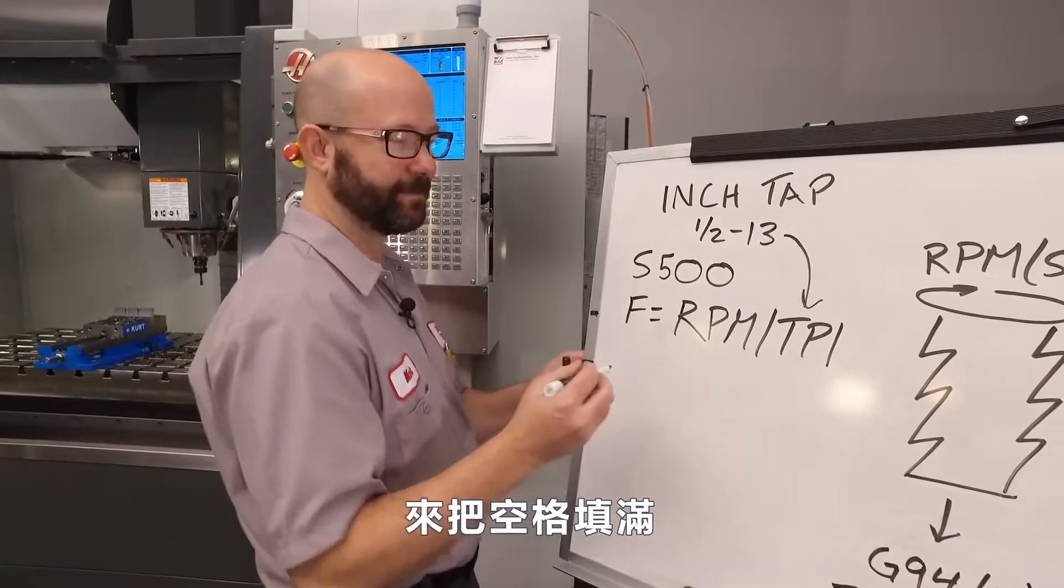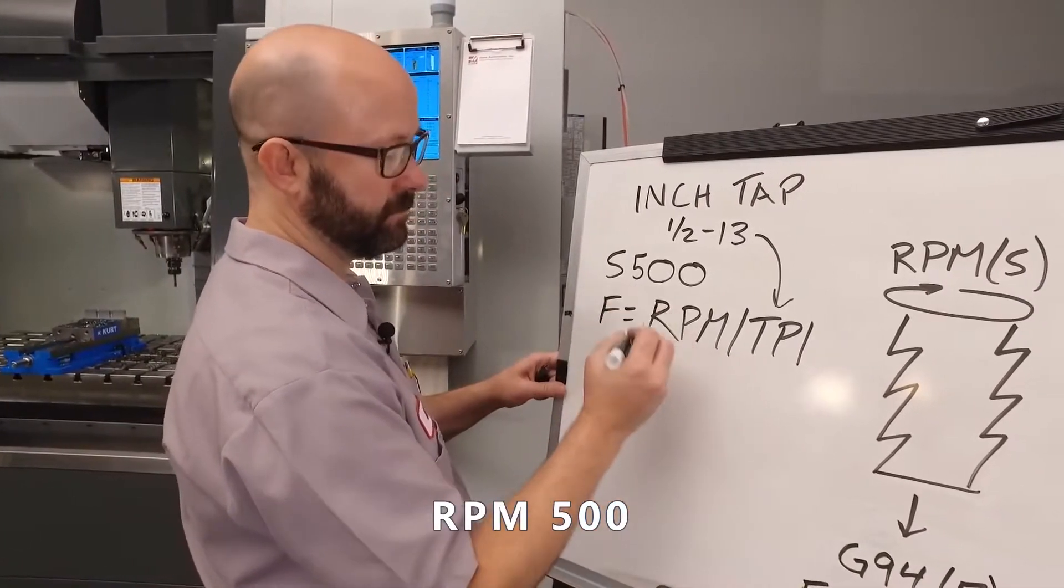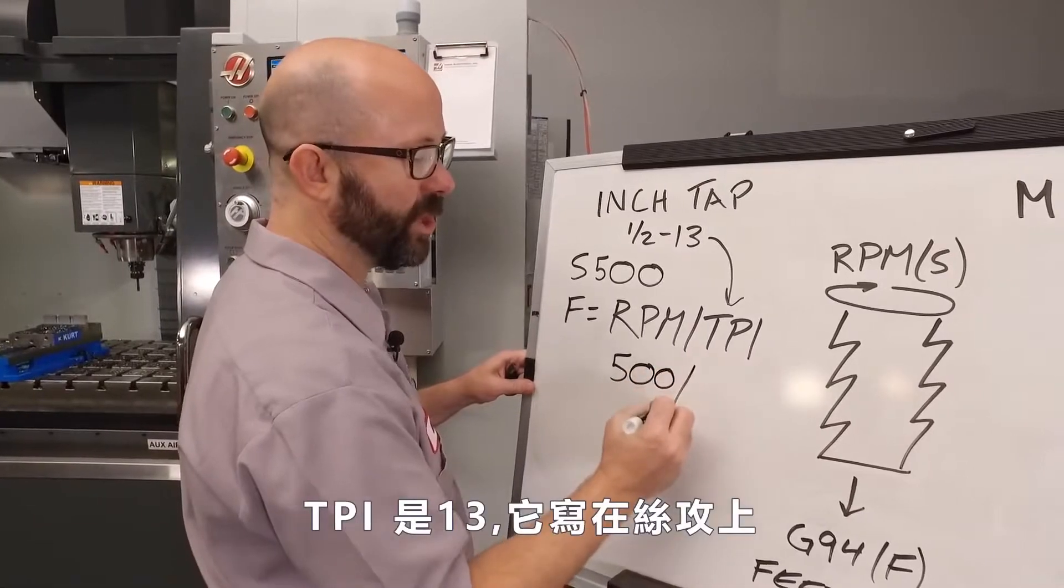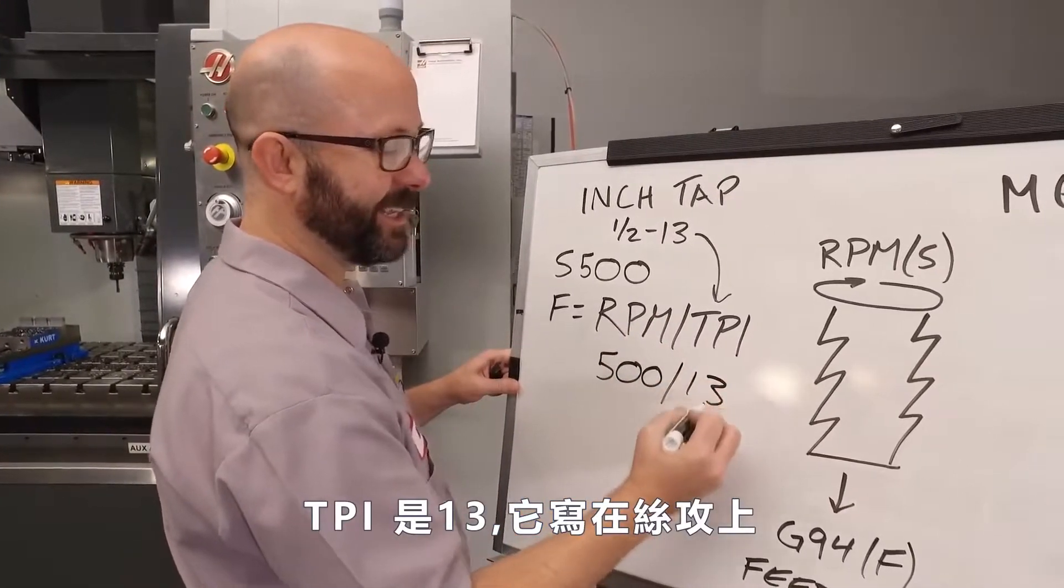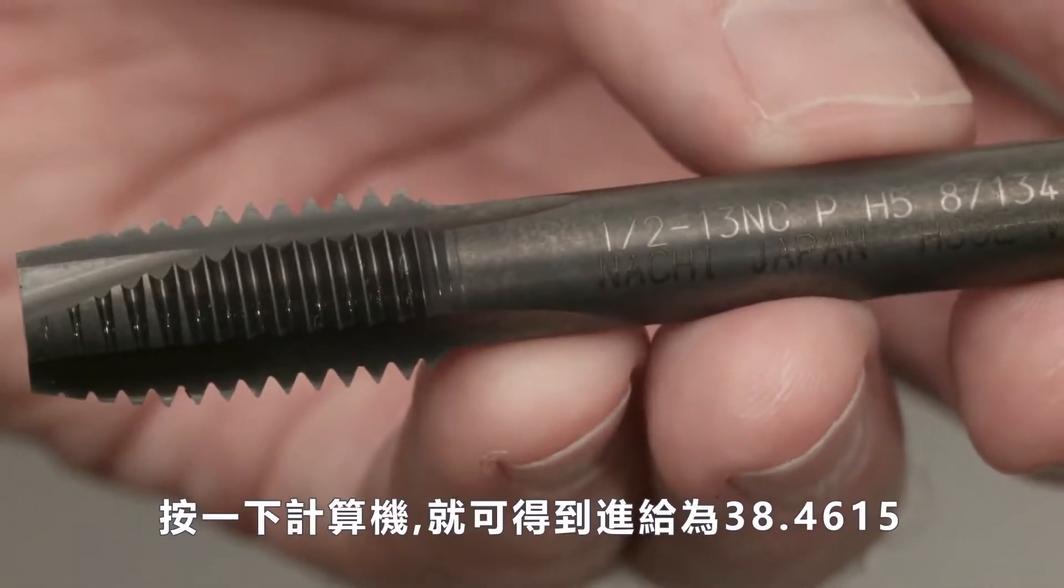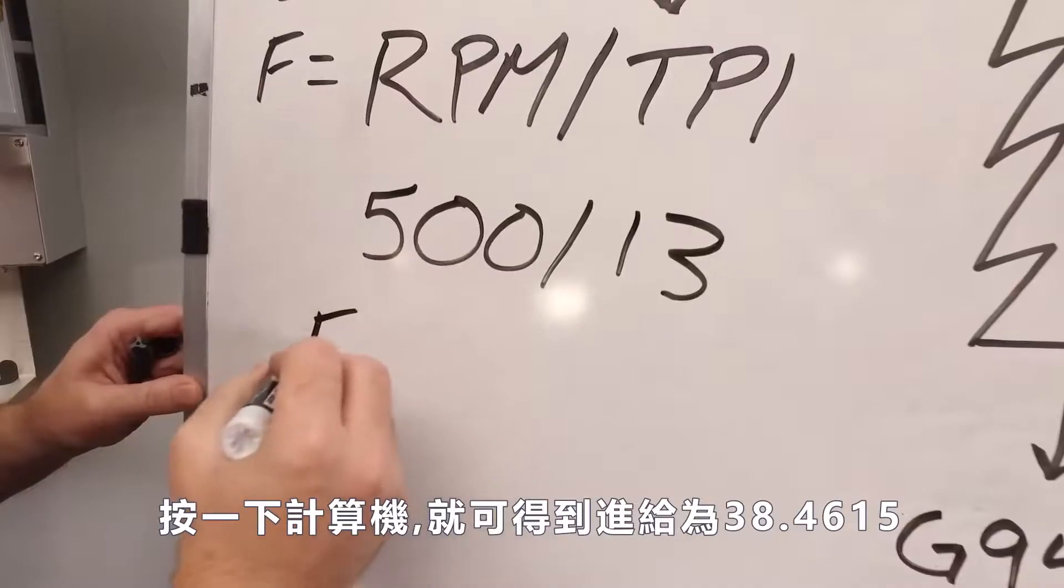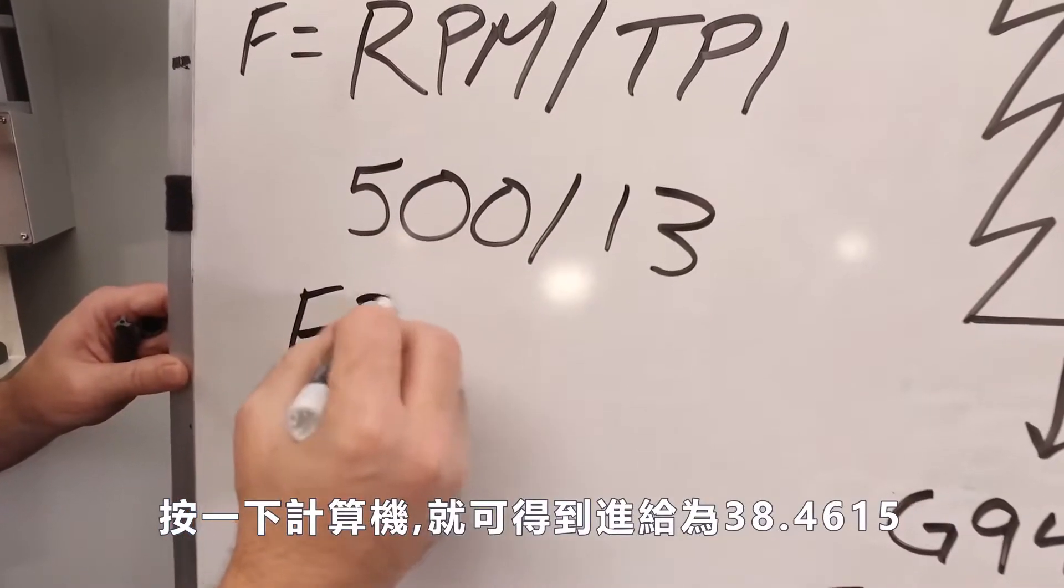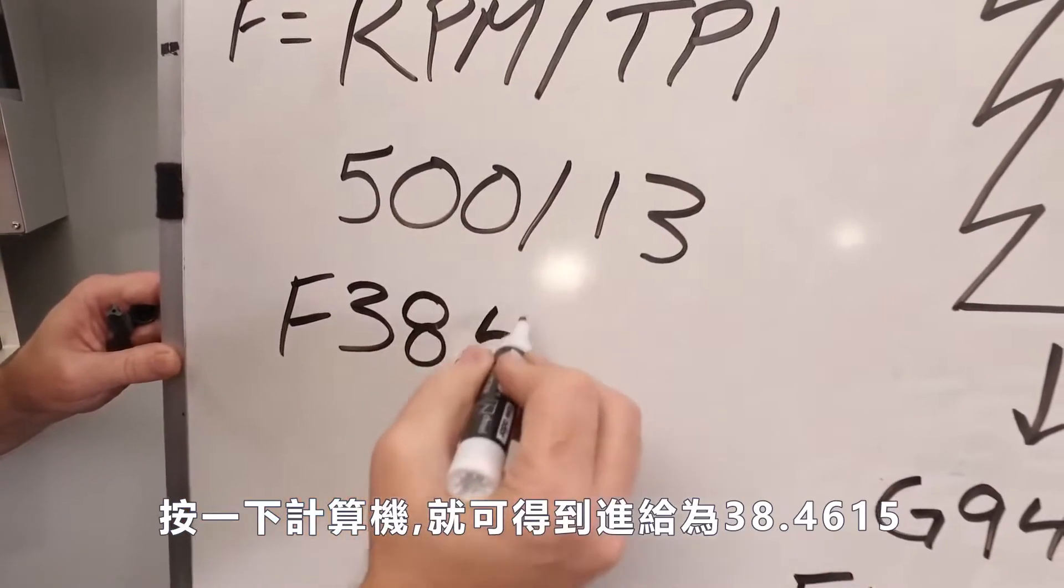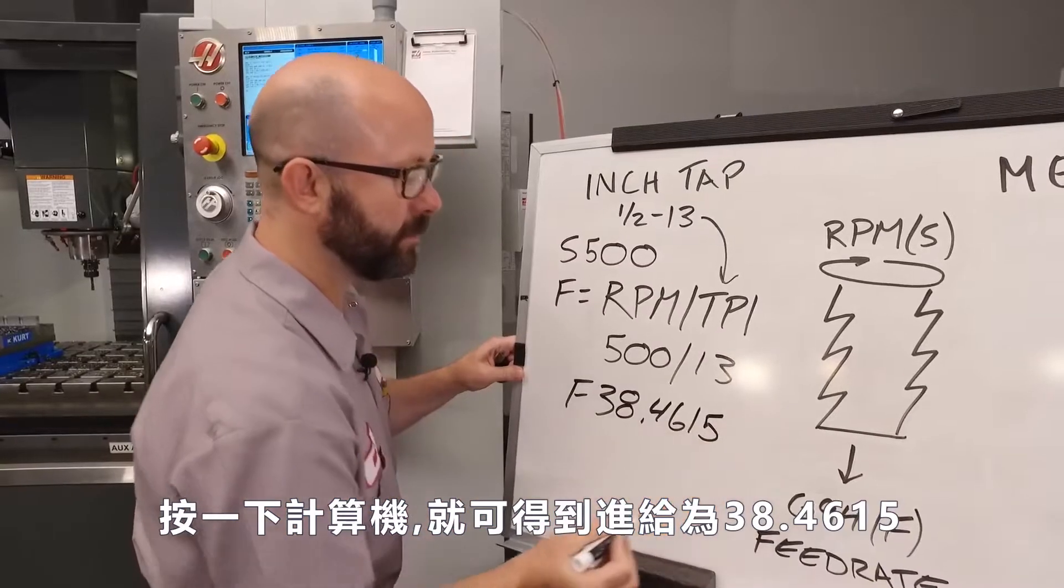Let's fill in the blanks. RPM 500. We know our TPI is 13. It was written on the tap. If we run this through a calculator, we're going to get a G94 feed rate of 38.4615 inches per minute.